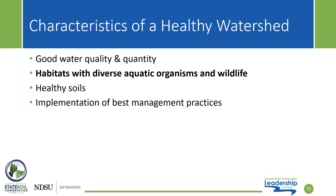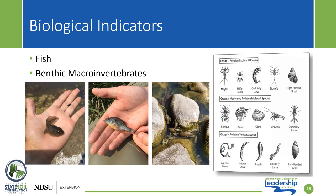The second characteristic of a healthy watershed is habitats with diverse aquatic organisms and wildlife. Biological indicators such as fish and benthic macroinvertebrates can be used to quantify the health of a water body. Certain species of fish and benthic macroinvertebrates are unable to survive in heavily polluted waters — these species are considered to be pollution intolerant. When we sample for them, if those pollution-intolerant species are not present, we know that the water quality is poor.